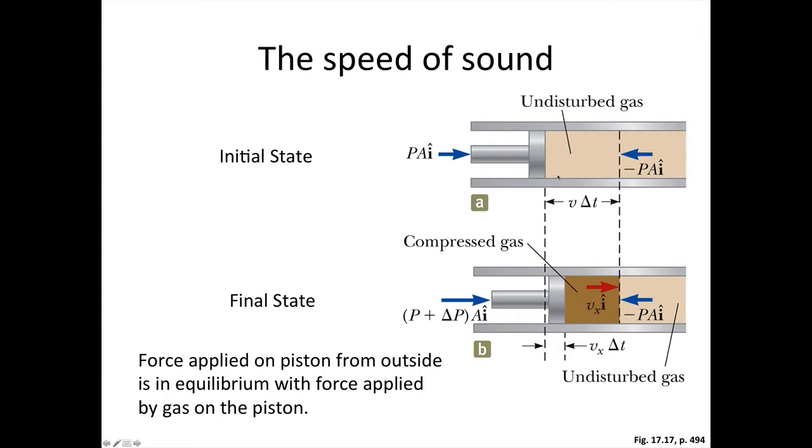What we're going to consider is a length of gas here with a length V delta T. Now, the reason we're choosing that V delta T is that V is the speed of sound in this medium. So if we do compress it, V is the speed at which that compression travels through the medium, because sound, as we said before, is just a compression wave.